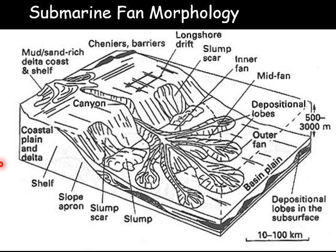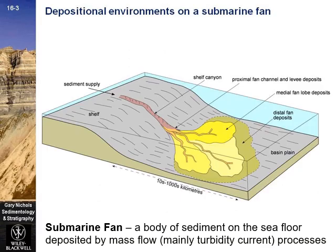Submarine fan morphology. The submarine fan is normally dominated by turbidite deposits. It can form several depositional lobes. To some extent, the submarine fan is similar to an alluvial fan or even a river-dominated delta in terms of form. In this diagram, you can see the different features of the continental slope and continental rise, the processes, the spatial distribution, the direction of currents, and a deep canyon, all described in this quite simple diagram.